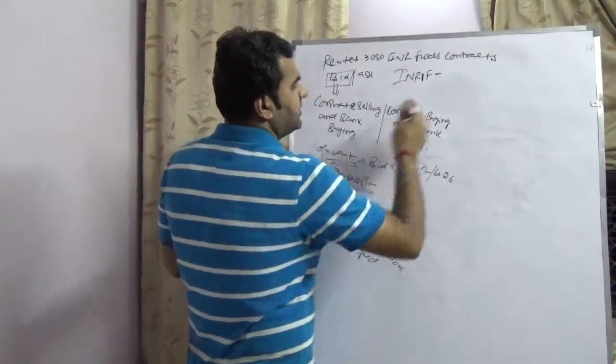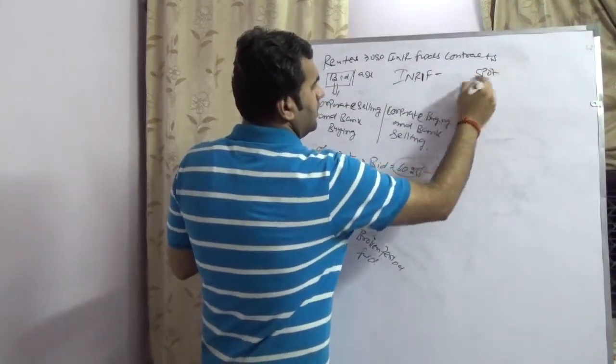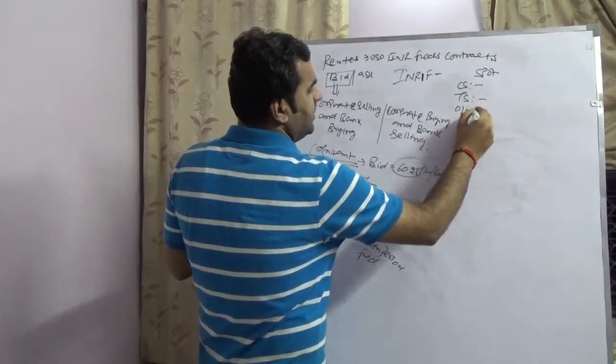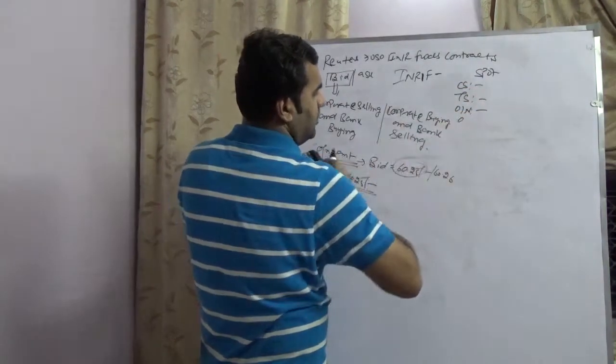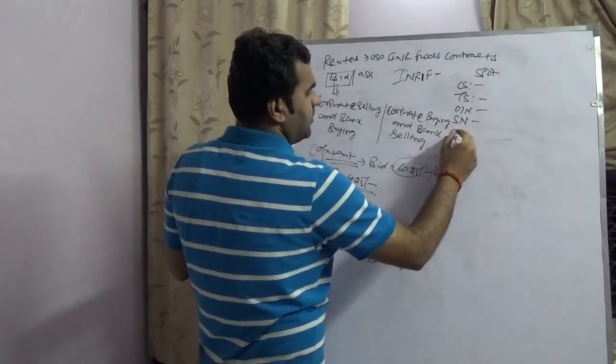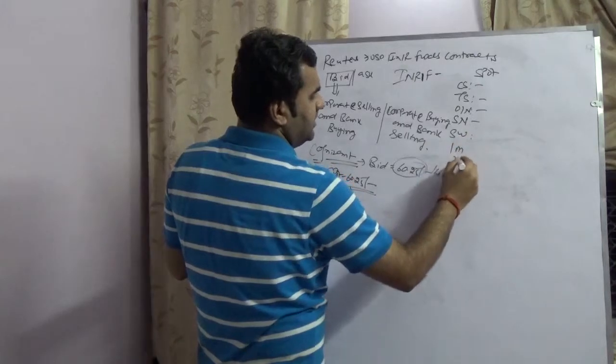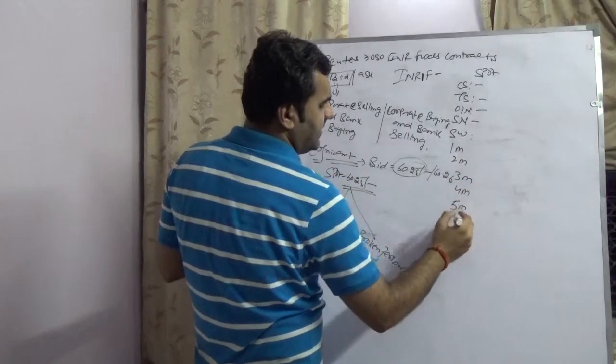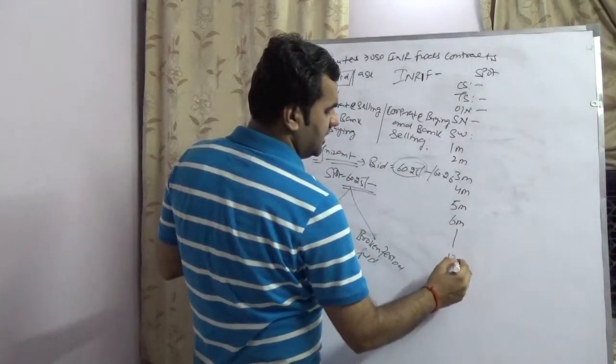Let me write again. It would be your spot, cash spot, tom spot, overnight, which is your spot next, spot week, 1 month, 2 month, 3 month, 4 month, 5 month, 6 month till 12 months.